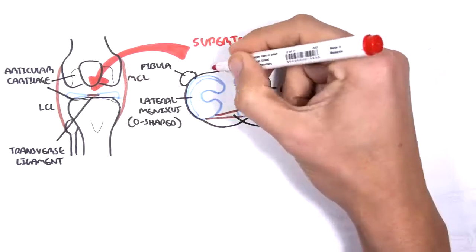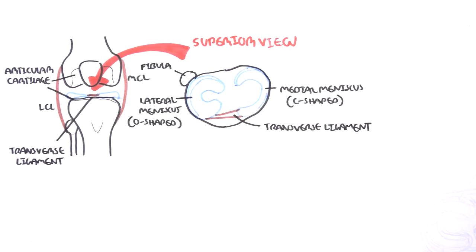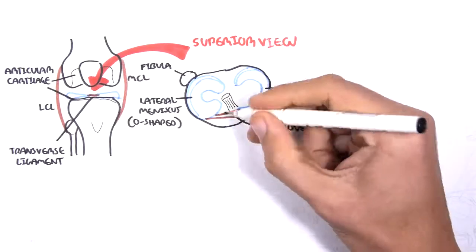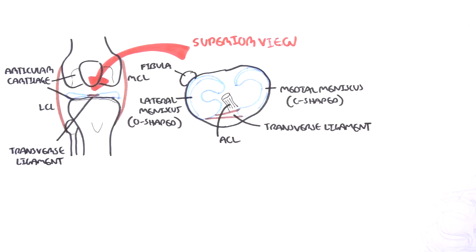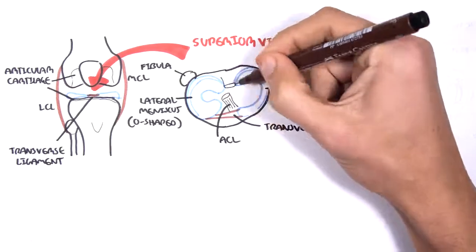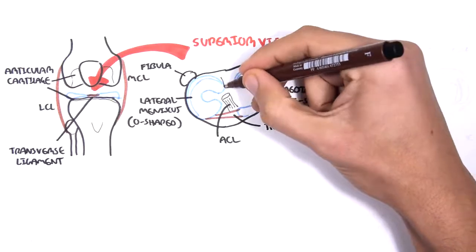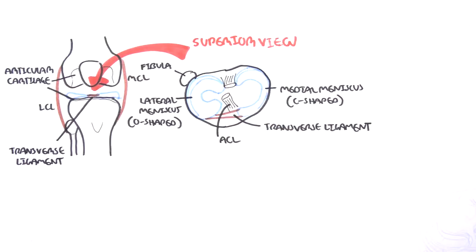There are two other important ligaments inside the knee joint that help stabilize the knee. They are named according to where they attach on the tibial bone. The ACL ligament or the anterior cruciate ligament joins to the anterior part of the tibia. And the PCL, the posterior cruciate ligament, joins at the posterior part of the tibia.